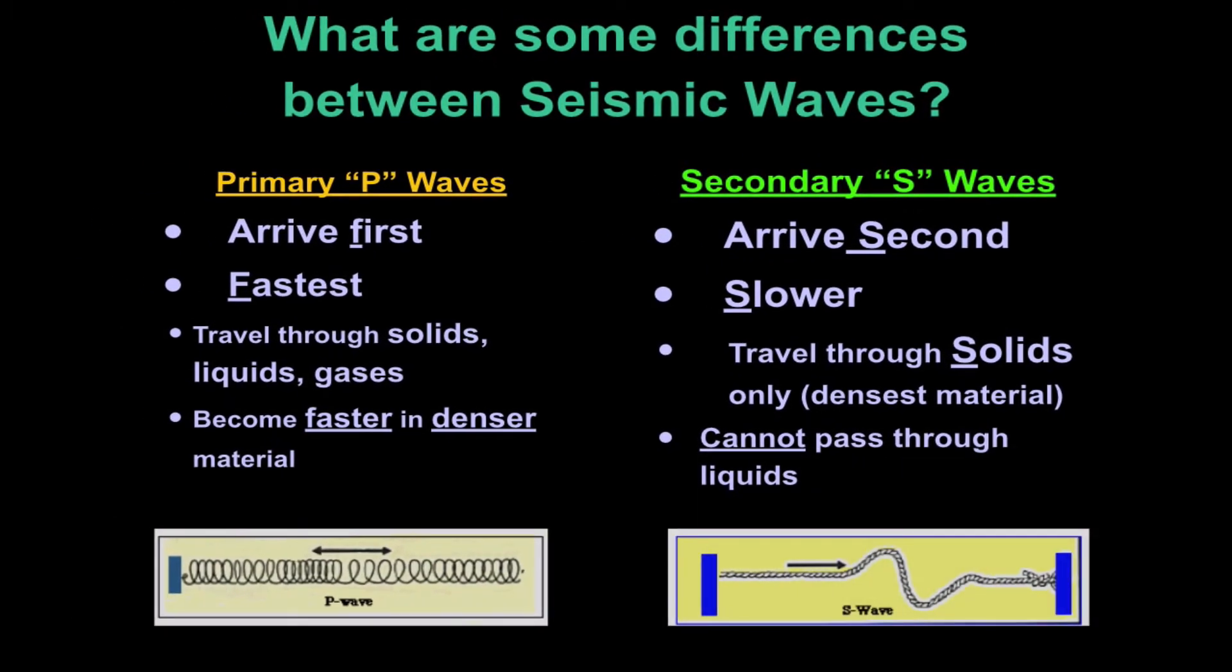There are some differences between seismic waves. Primary waves, or P waves, makes it easier to remember they arrive first, and because they arrive first, they're faster waves. They can travel through, and this is extremely important, solids, liquids, and gases.